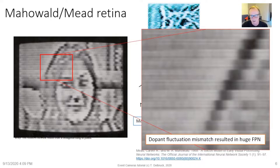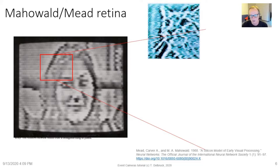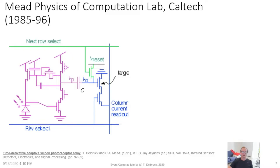That, coupled with low fill factor and not doing many useful operations, doomed this design. Here's an example of a chip I worked on from around 1985 to 1996, approximately 1991: the so-called Time Derivative Adaptive Silicon Photoreceptor Array, published at an SPIE meeting around that time.